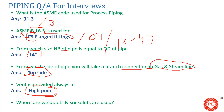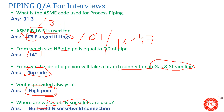Where are weldolets and sockolets used? Weldolets and sockolets are used for butt-weld and socket-weld branch connections, especially for small diameter pipes less than four inches.